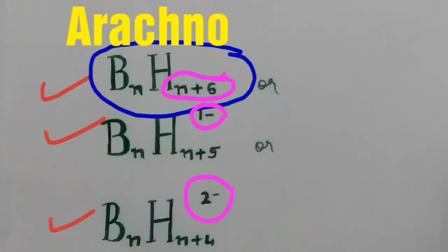The next type is arachno. Boranes with the following formulae will be the case of arachno.